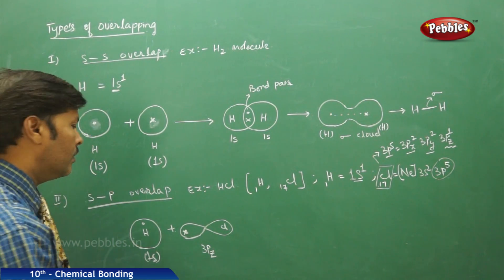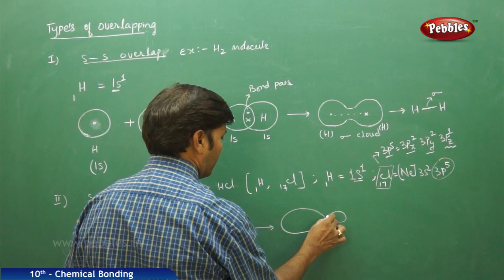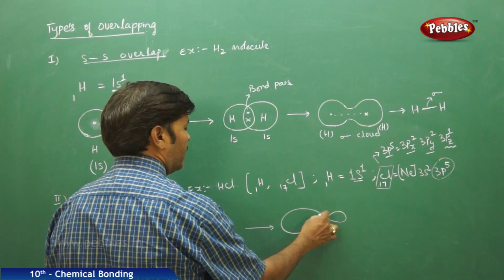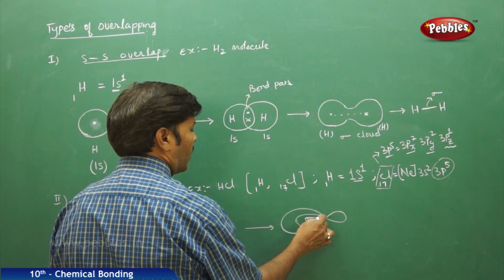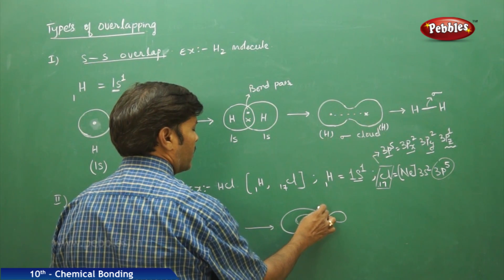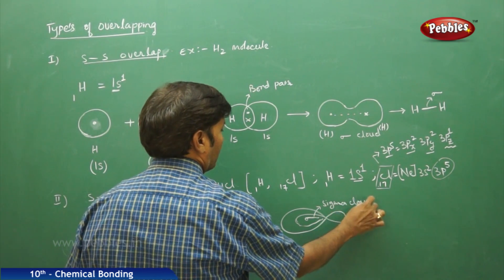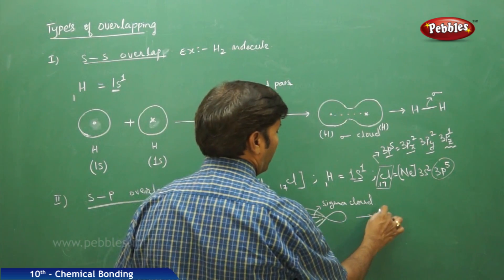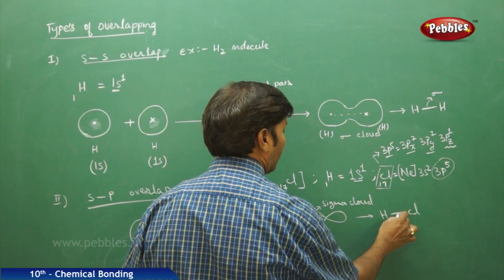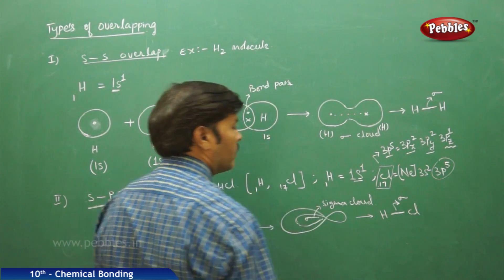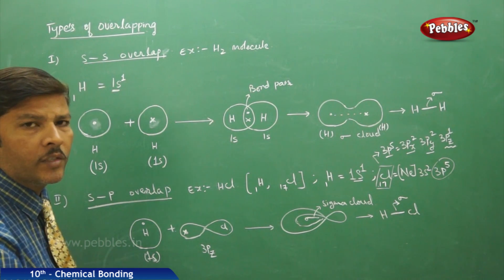Before overlapping, we have the spherical 1s atomic orbital of hydrogen with its unpaired electron, and the double-lobed 3pz atomic orbital of chlorine with its unpaired electron. After overlapping, a sigma bond is formed. The single bond between hydrogen and chlorine in HCl is nothing but a sigma bond. This is the SP type of overlap.